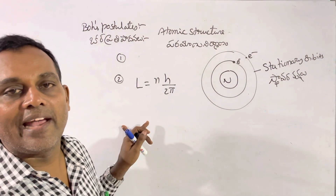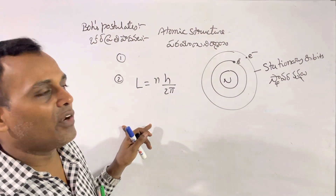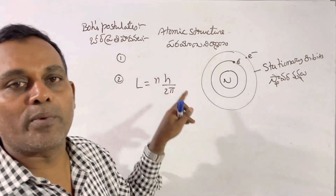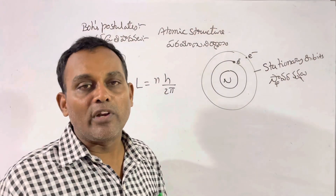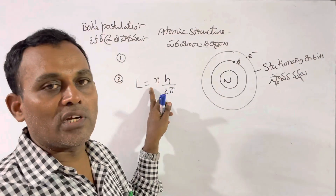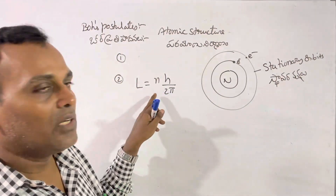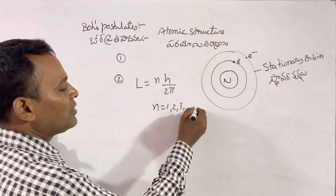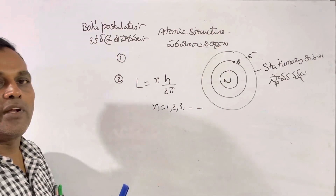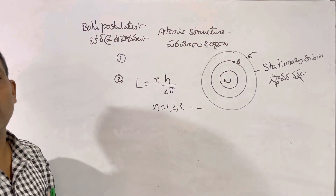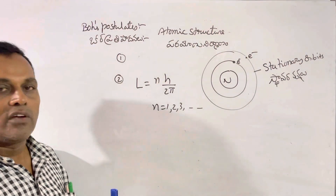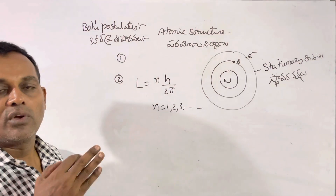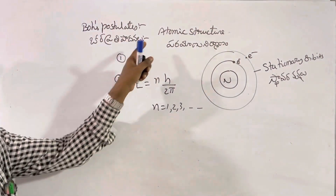The angular momentum of an electron revolving in a particular orbit is equal to the integral multiple of h by 2π, where n is equal to 1, 2, 3, and so on. This is the second assumption of Bohr for atomic structure.